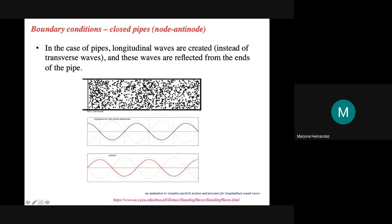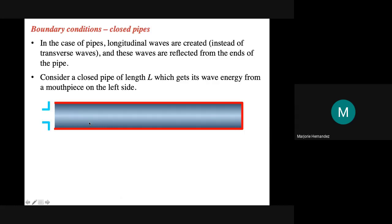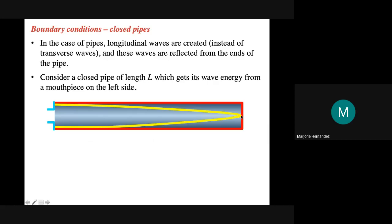When we draw standing waves of pipes, we draw them like the string, but take note that the air particles are moving side to side. For a closed pipe with length L — one end closed, one end open — the fundamental frequency or first harmonic should have a node at the closed end and an antinode at the open end. The antinode is at the open end and the node is at the closed end because the air cannot move at the closed side — there's no displacement.